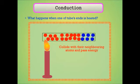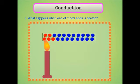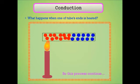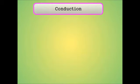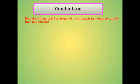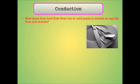Is tariqe se heat solid ke dusre point tak pahunchti hai. This process continues. Yeh ek slow process hai jo solids mein heat ka kuch hissa hot se cold part ki taraf le jata hai. How does heat flow from hot to cold parts in metals so rapidly than non-metals? Because metal mein free electrons hote hain.